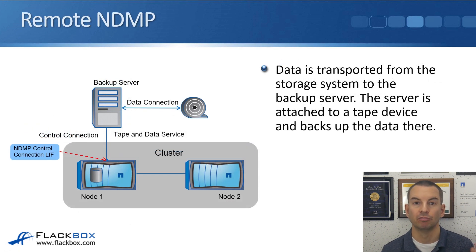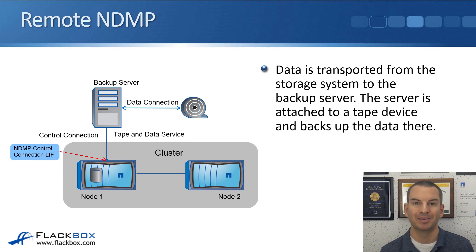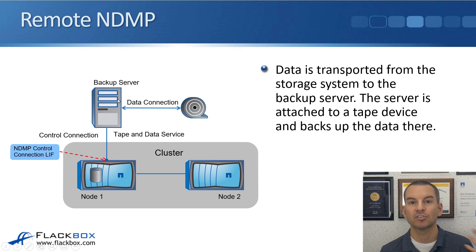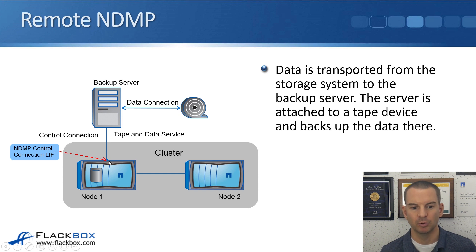The next type is remote NDMP. With remote NDMP, data is transported from the storage system to the backup server, which is attached to a tape device and backs up the data there. The difference from local NDMP is that the tape device is now attached to the backup server rather than Node 1. The backup server still communicates with the ONTAP system, and the data is sent over the IP network to the backup server and backed up to tape from there.